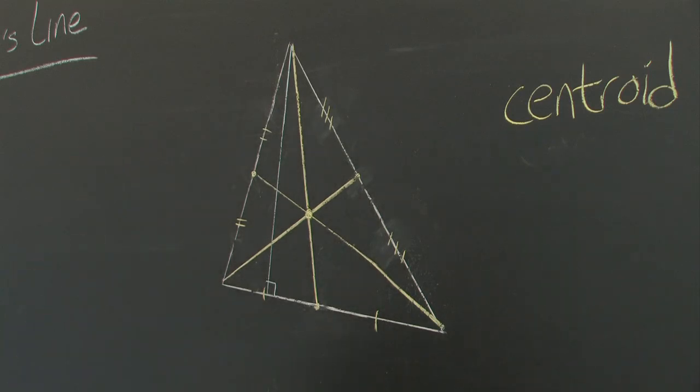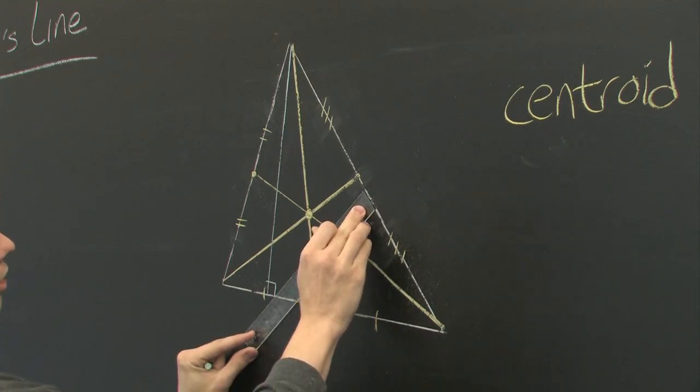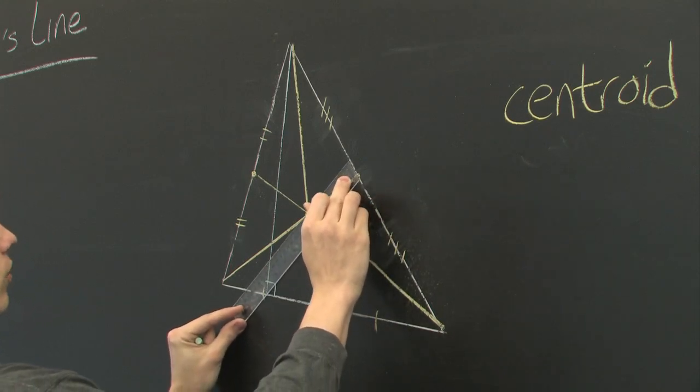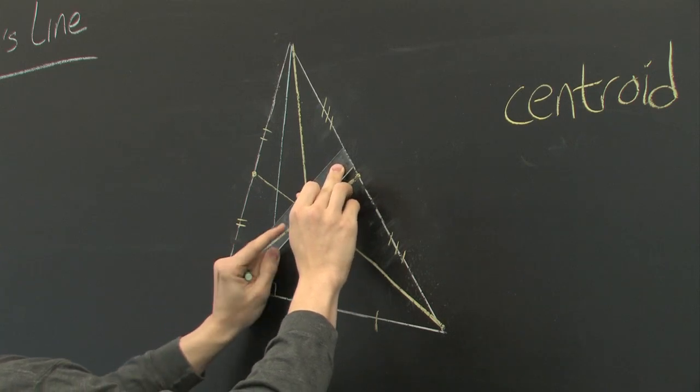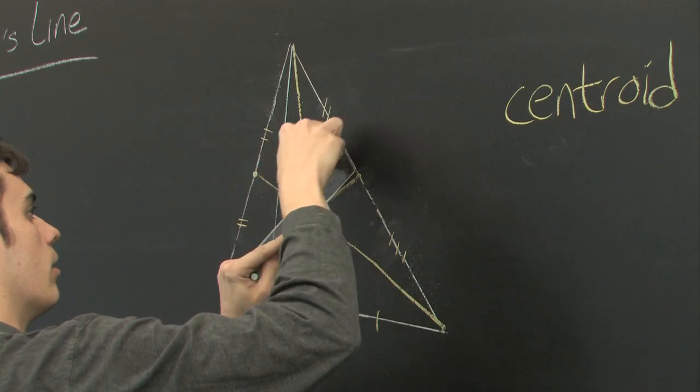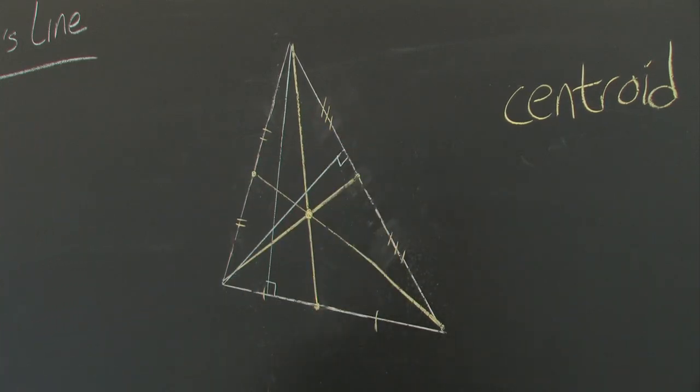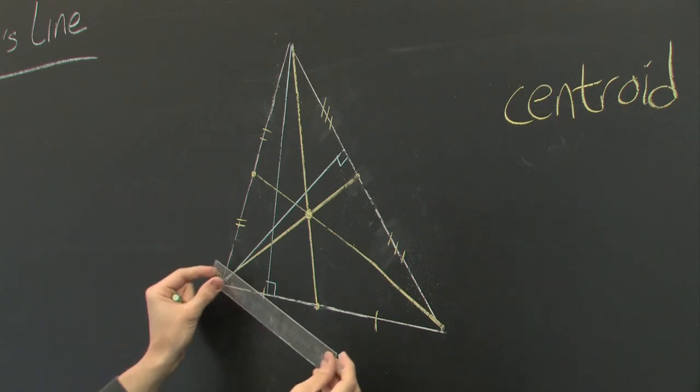Okay? And we'll do that for the others. Perpendicular to this line, shift our ruler until it intersects with the opposite vertex. Finally, we'll do that one more time.